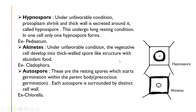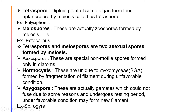Akinetes are found in Cladophora. The next type of asexual reproduction is autospores. These are resting spores whose germination starts within the parent body — this is known as precocious germination. Each autospore is surrounded by a distinct cell wall, and their germination starts within the parent body. Example: Chlorella.